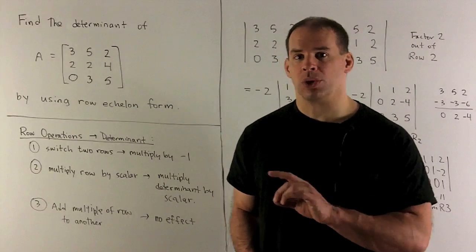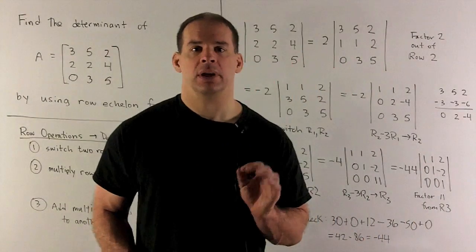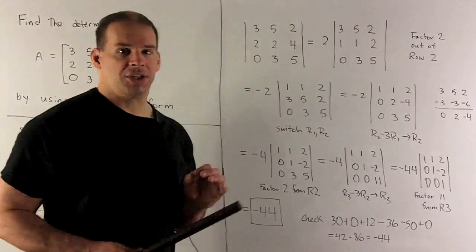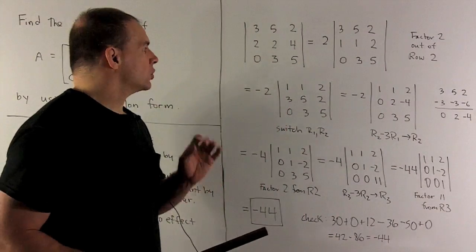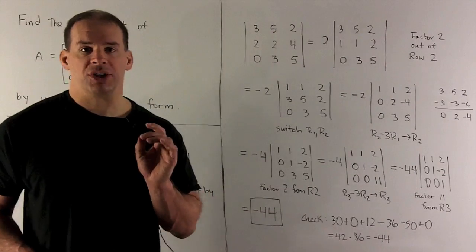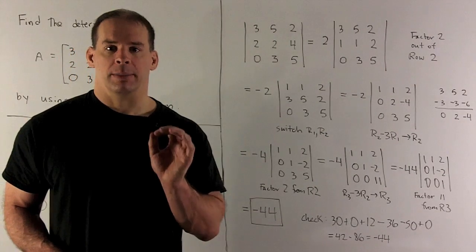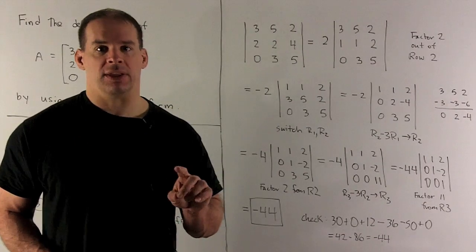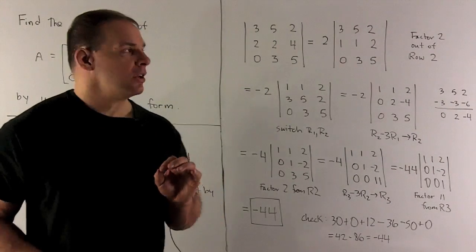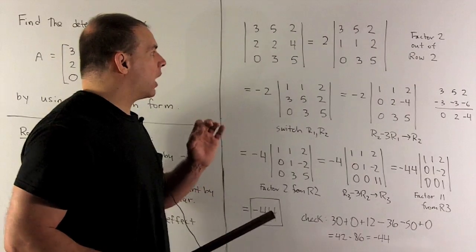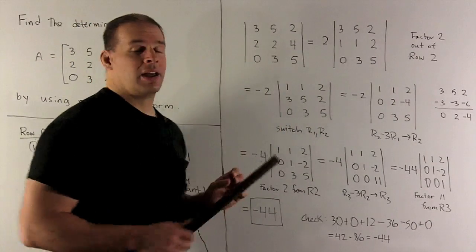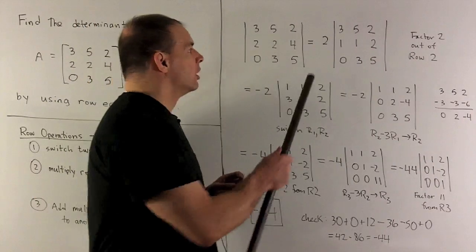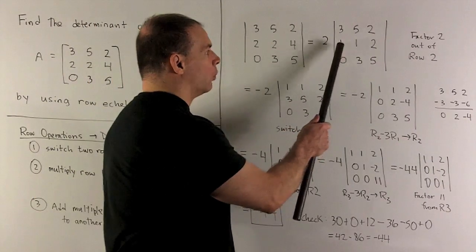Let's apply these rules to our special case. We're going to write our matrix with bar notation for the determinant. We want row echelon form, so in the best case we'll have ones along the diagonal and zeros beneath it. Looking at our matrix, we can immediately factor a 2 out of row 2. So that's going to be my first operation, and we're left with 1, 1, 2 in that row.